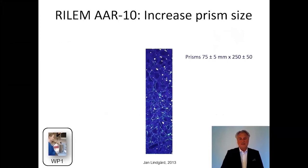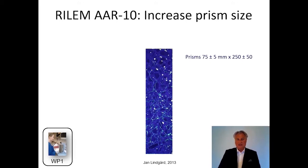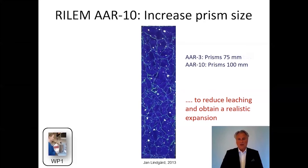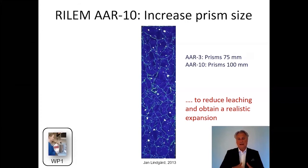One reason we developed the RILEM AAR10 was the need to increase prism size. In Norwegian research and the PhD work by Jan Lindgård in 2013, it was realized that with smaller prisms, there was a problem of leaching at the top and bottom of the prisms. By leaching you reduce the alkali content, which is not good for a performance test. The AAR3 prisms had a width of only 75 millimeters; the new prisms are increased to 100 millimeters, reducing leaching and obtaining a more realistic expansion.